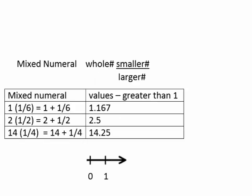Then there's something called a mixed numeral, where we have a whole number next to a regular fraction. So, a whole number next to a smaller number over a larger number. For example, 1 and 1/6, 2 and 1/2, 14 and 1/4. Now, these mixed numerals are really addition problems. We're adding the whole number to the fractional value. So, 1 and 1/6 is 1 plus 1/6. 2 and 1/2 is 2 plus 1/2. 14 and 1/4 is 14 plus 1/4. And there are the corresponding values. Because mixed numerals are whole numbers and a fraction, the values of mixed numerals are, of course, greater than 1.